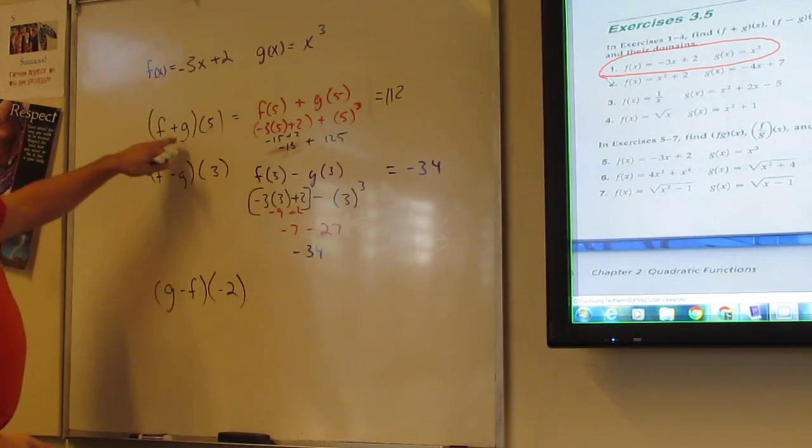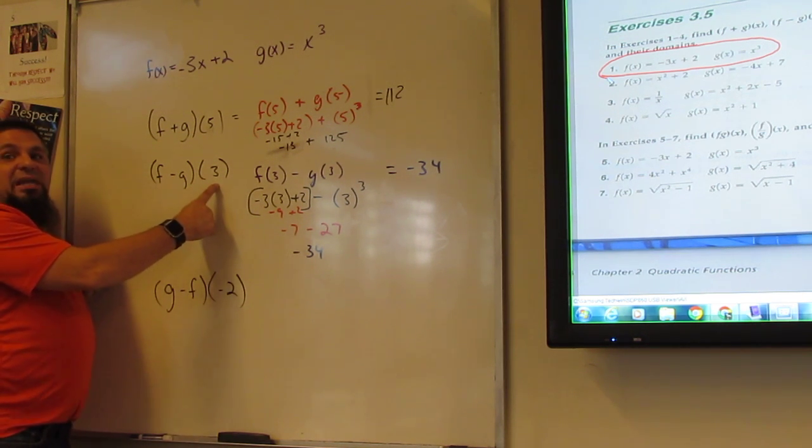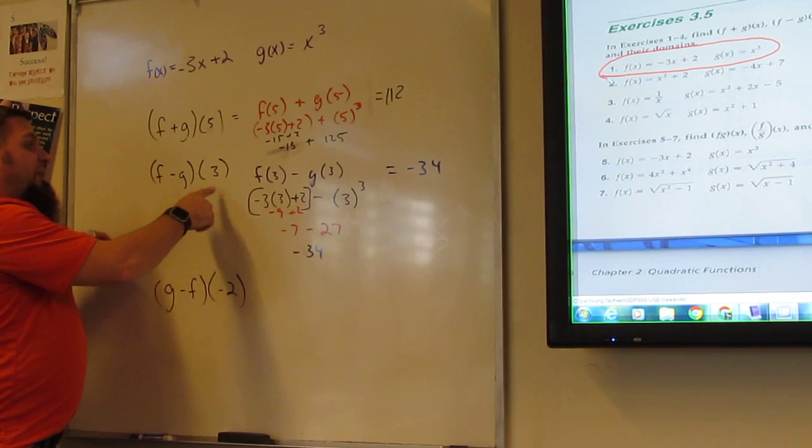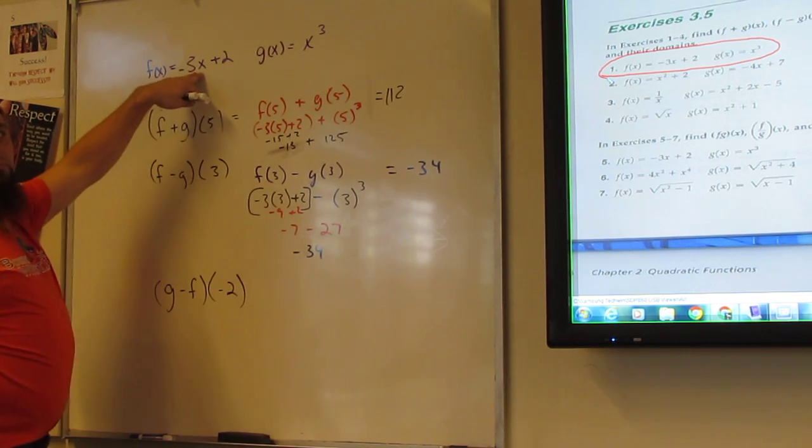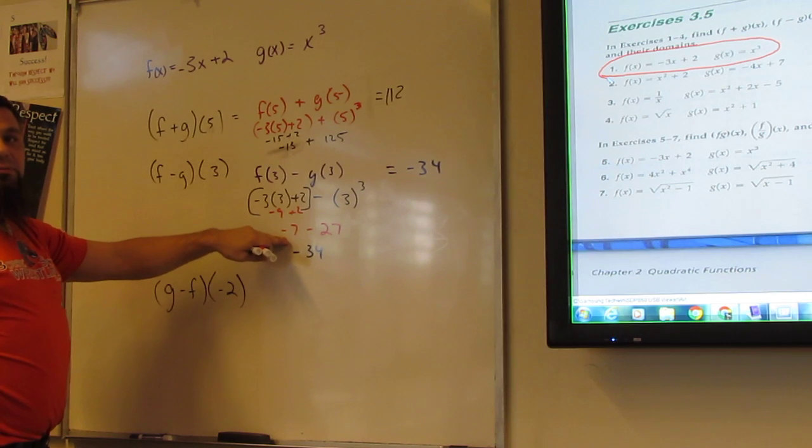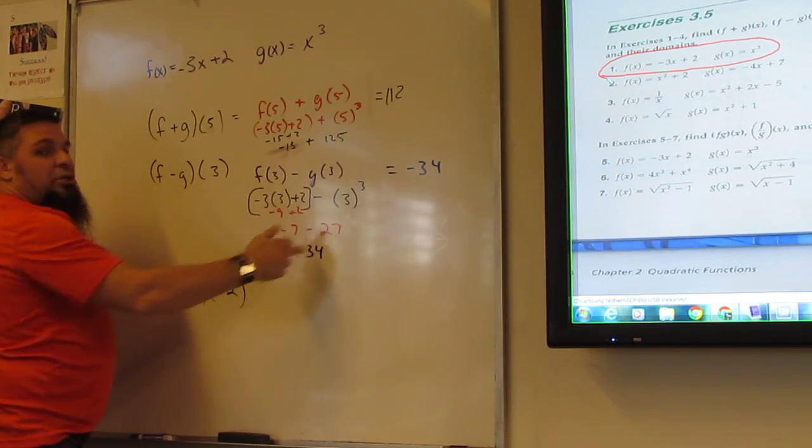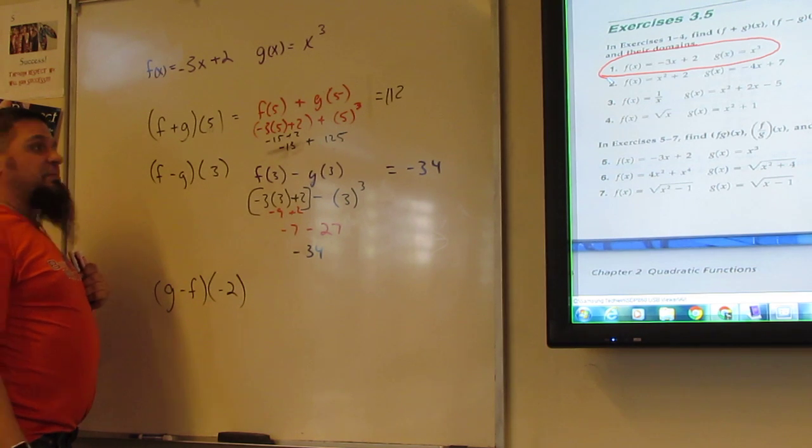and that's the answer for f plus g. The answer for f minus g with respect to 3 was if I plug the 3 in, then I've got 3 times -3 plus 2, which we found to be -7. And then I subtracted the cube of 3, which is 27, and we found that to be -34.